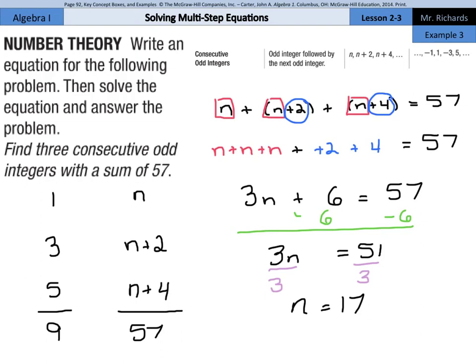Now we're not done yet. Our n is equal to 17. That's just the first odd integer. And so our answer for this is actually going to be 17, followed by the next two odd integers, 19 and 21.